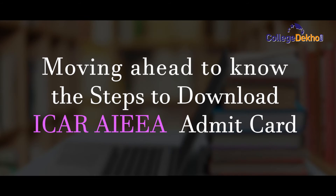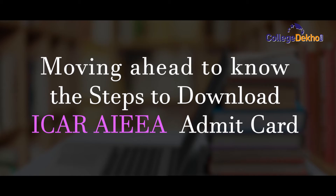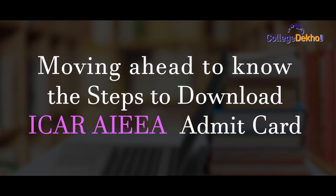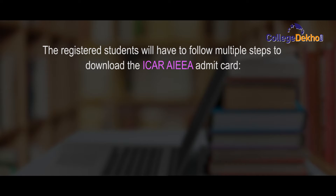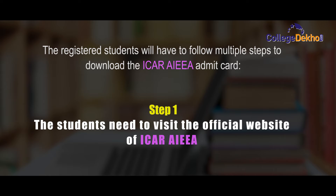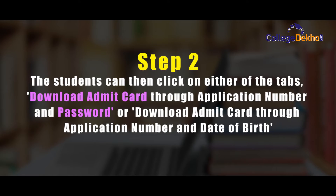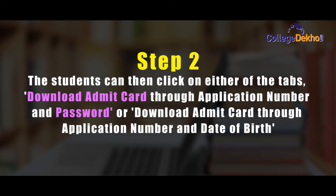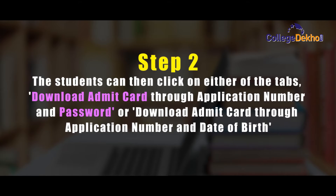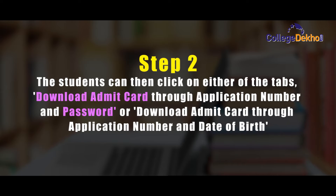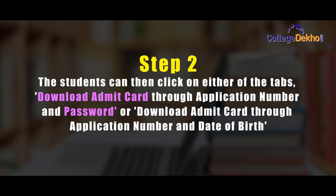Moving ahead, to download the ICAR AIEEA admit card, registered students will have to follow these steps. Step one: visit the official website of ICAR AIEEA. Step two: click on either of the tabs — 'Download admit card through application number and password' or 'Download admit card through application number and date of birth.'